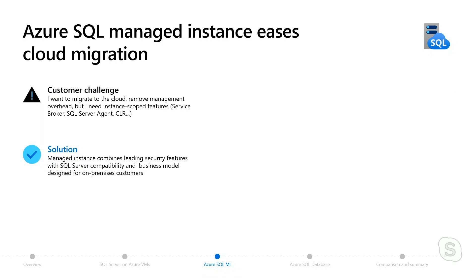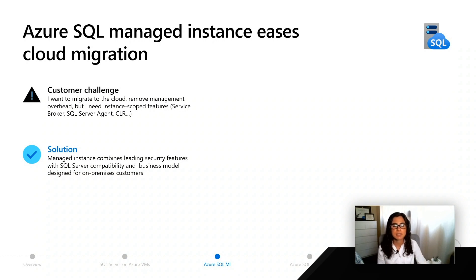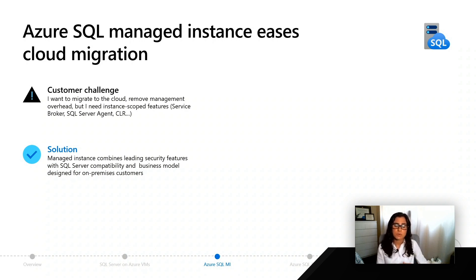Maybe they need instance-scoped features. When we talk about instance-scoped features, we really mean features that are scoped to the server as opposed to the database. This includes things like Service Broker, SQL Server Agent, CLR, and Machine Learning Services. These are just a few of the reasons why we see customers moving towards Azure SQL Managed Instance.